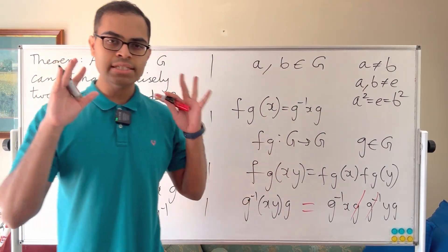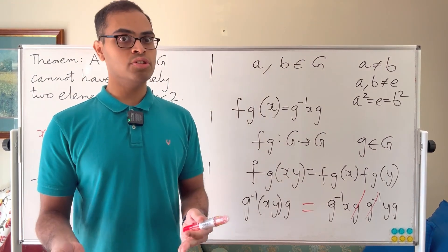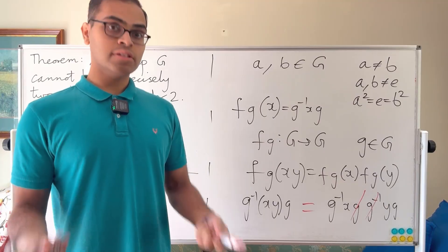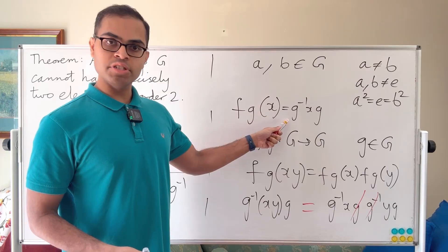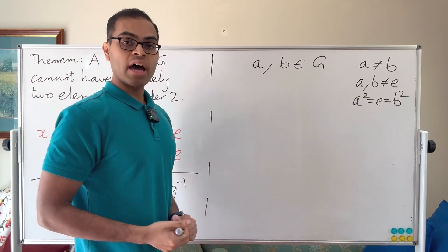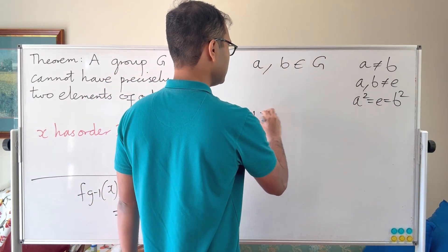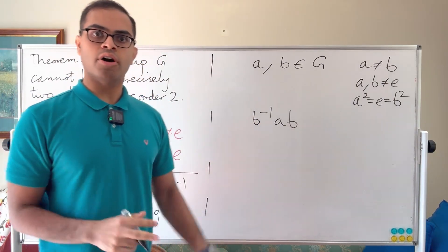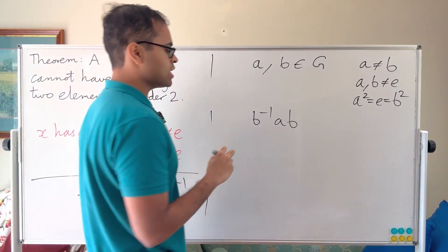Why go through all this? It's conceptually important: isomorphisms preserve group-theoretical structure. So if you have an element of order 2, such as a, and you conjugate it by some g, you get another element of order 2. As a specific example, we'll look at b⁻¹ab. In general, g⁻¹ag would be an element of order 2 for any g, but let's focus on b⁻¹ab.